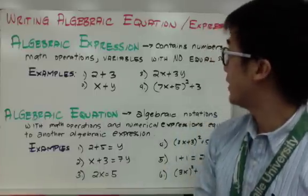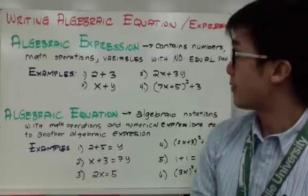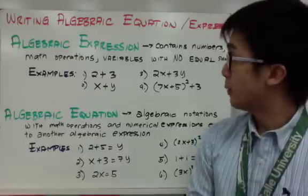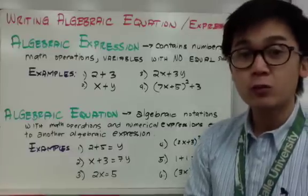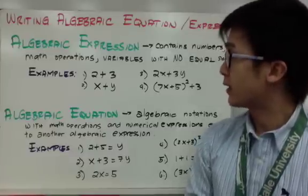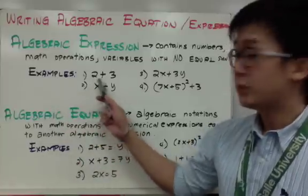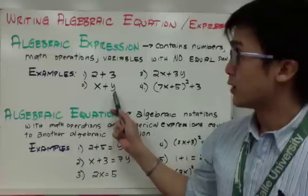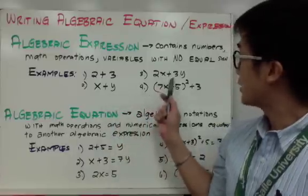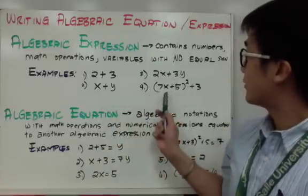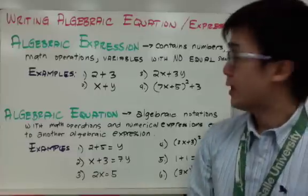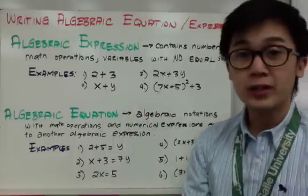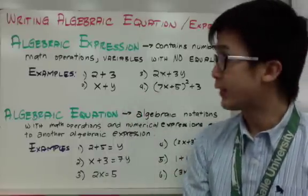An algebraic expression, by definition, contains numbers, math operations, and variables with no equal sign. Basically, an expression doesn't have an equal sign. For example, 2 plus 3 is an algebraic expression because there's no equal sign. X plus Y, 2X plus 3Y, and the square of 7X plus 5 plus 3 are all algebraic expressions because they don't contain an equal sign.